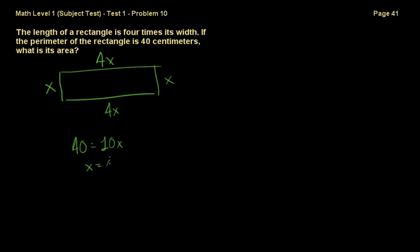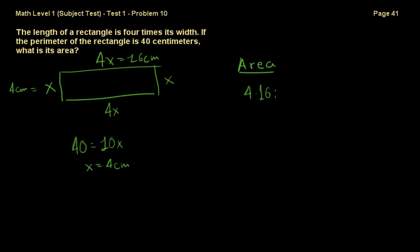So the width is 4 centimeters, and the length is 4 times 4, which is 16 centimeters. To find the area, we multiply width by length: 4 times 16 equals 64 centimeters squared. The correct answer is E.